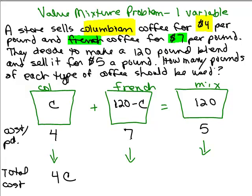For the French, it costs $7 per pound and I have 120 minus C. So you need to multiply 7 times 120 minus C and make sure you put that 120 minus C in parentheses. So the total cost if I took C pounds of Colombian and 120 minus C French would be 4C plus 7 times 120 minus C.